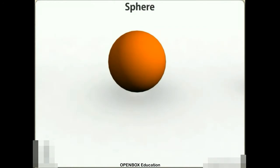Sphere. A sphere is a solid generated by the revolution of a semicircle about its diameter as the axis. The midpoint of the diameter is the center of the sphere. All points on the surface of the sphere are equidistant from its center.